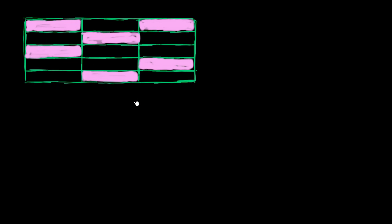Let's think about what fraction of this grid is actually shaded in pink. The first thing we want to think about is how many equal sections do we have here. This is a 5 by 3 grid, so there are 15 sections here.